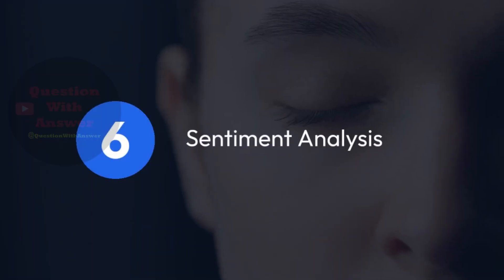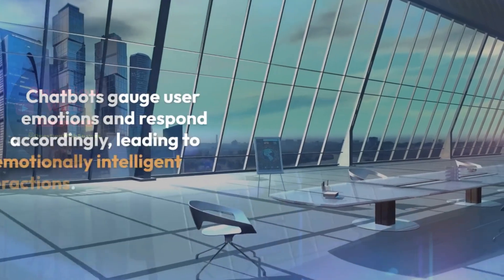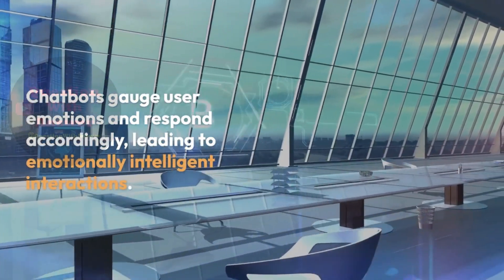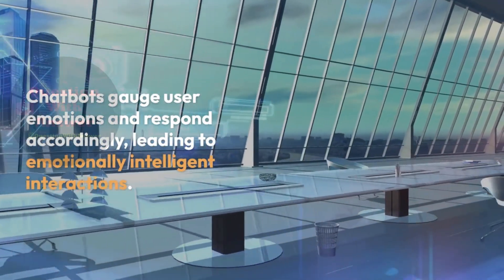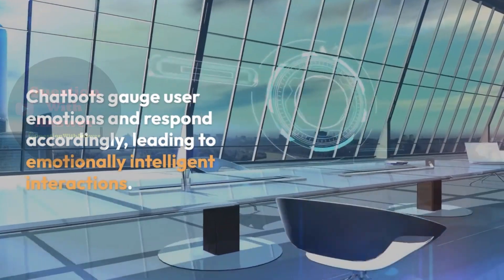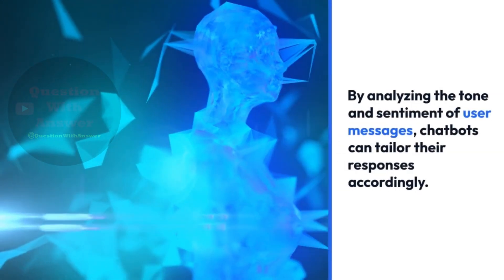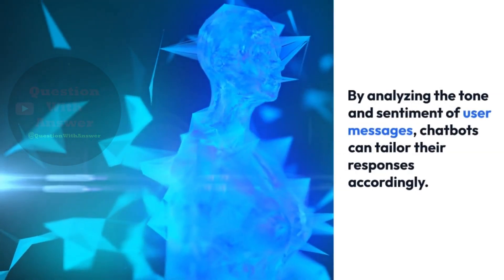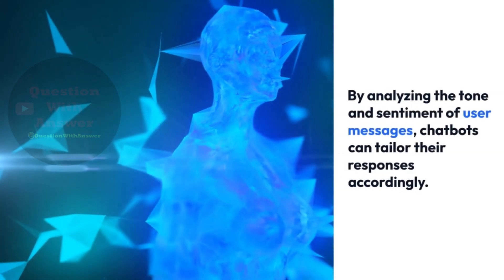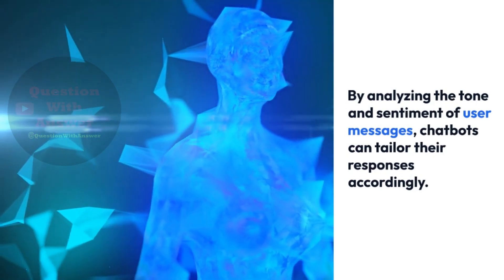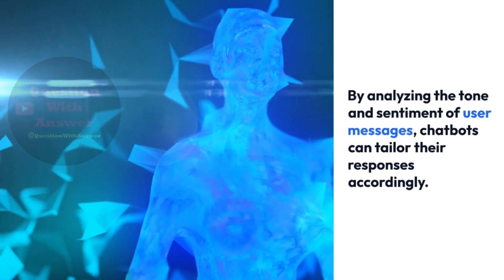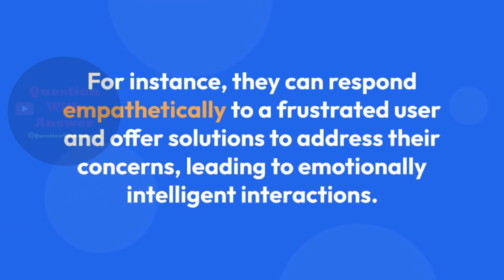6. Sentiment Analysis. Chatbots gauge user emotions and respond accordingly, leading to emotionally intelligent interactions. By analyzing the tone and sentiment of user messages, chatbots can tailor their responses accordingly. For instance, they can respond empathetically to a frustrated user and offer solutions to address their concerns, leading to emotionally intelligent interactions.